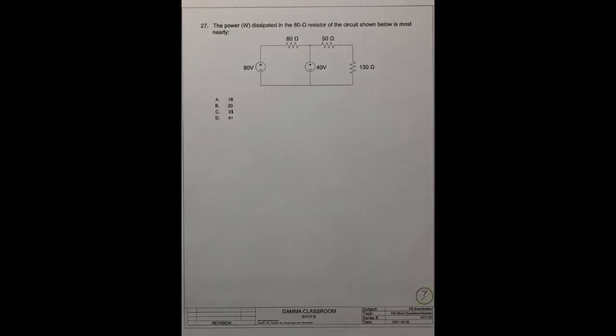Question 27. The power dissipated in the 80 ohm resistor of the circuit shown below is most nearly... They have A, B, C, D for answers.